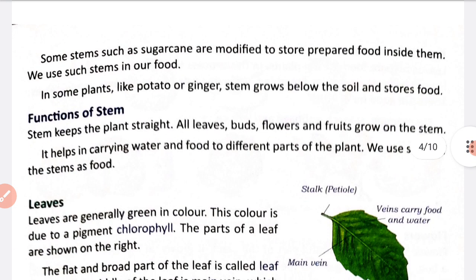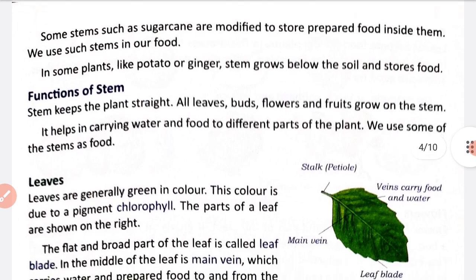Some stems such as sugarcane are modified to store and prepare food inside them. Sugarcane is a stem which we eat as food - it stores food. In some plants like potato or ginger, stem grows below the soil and stores food, which we eat.